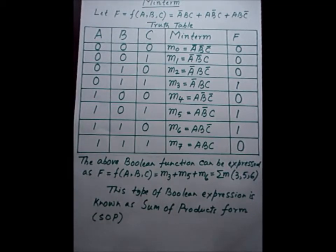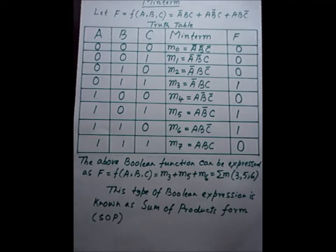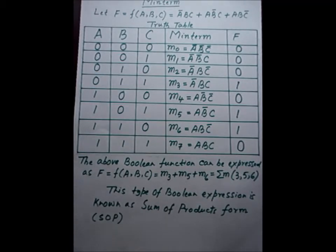We'll discuss the minterm first. A minterm is denoted by small m of i, where i is the subscript. It is a product of n variables where each variable is complemented if it is assigned to 0, and i varies from 0 to less than 2 to the power of n. For three variables, i varies from 0 to 7, and for four variables, from 0 to 15.